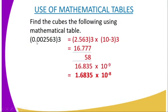the number is 0.002563. So what are you supposed to do? You are supposed to convert this number into standard form. And by writing it in standard form, you will get it as 2.563, 2 power 3 because it is a cube, times 10 to power negative 3 because the decimal has moved three steps toward the right-hand side.